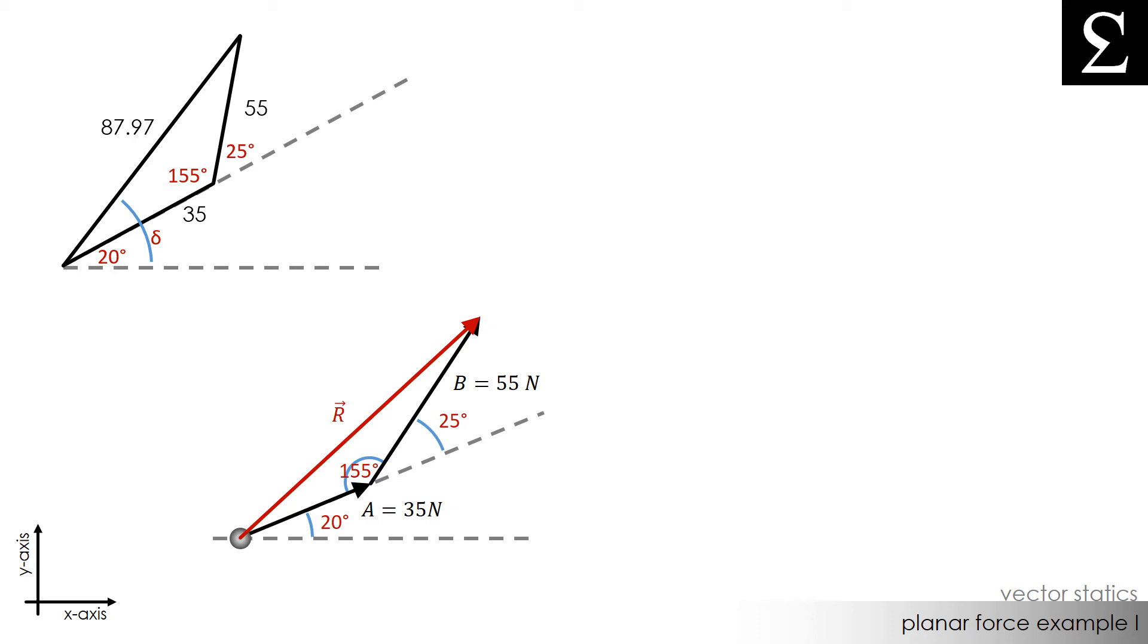In order to figure out what angle delta is, we need to know this angle, which I will call theta. We can use the law of sines to figure this out. Theta is our unknown, and it corresponds to the side of 55. The sine of angle theta divided by 55 is equal to the sine of 155 degrees divided by the side of 87.97.